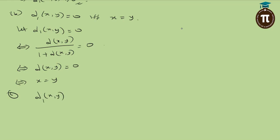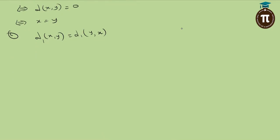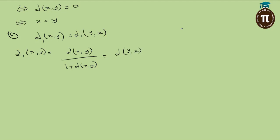For the third property, we want to prove that d₁(x, y) = d₁(y, x). d₁(x, y) = d(x, y) / (1 + d(x, y)). Since d is a metric, we can swap the arguments: d(x, y) = d(y, x), so this becomes d(y, x) / (1 + d(y, x)) = d₁(y, x). Therefore d₁(x, y) = d₁(y, x). Symmetry is proved.